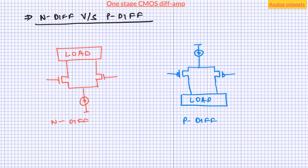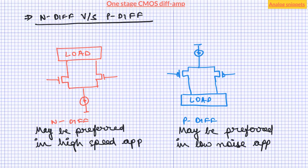In most cases, it is the input common mode range requirement which determines which one to use. But in certain low-noise, low-bandwidth applications, using PMOS would be preferred because of its low flicker noise. In certain high-speed applications, using NMOS would be preferred because of its high GM. With this in mind, let's now look at topologies.